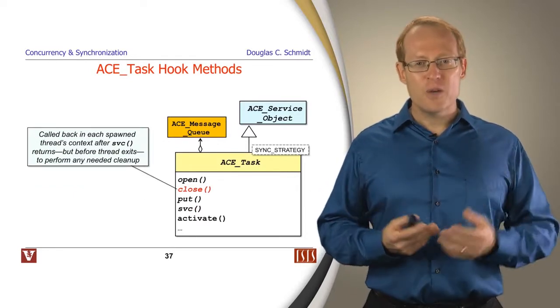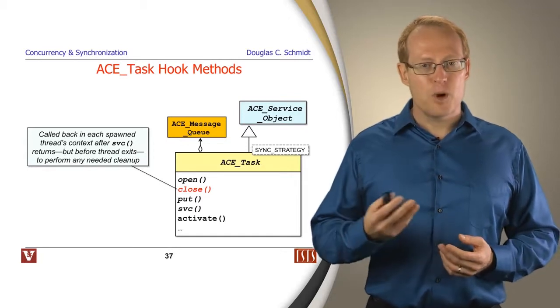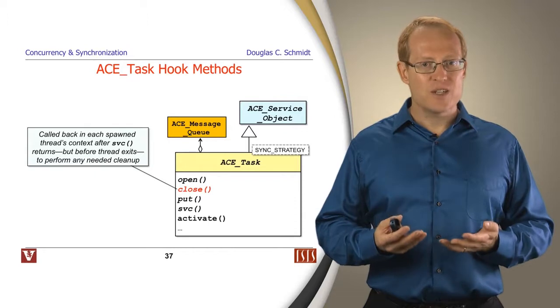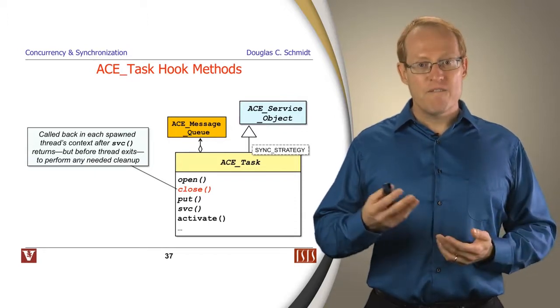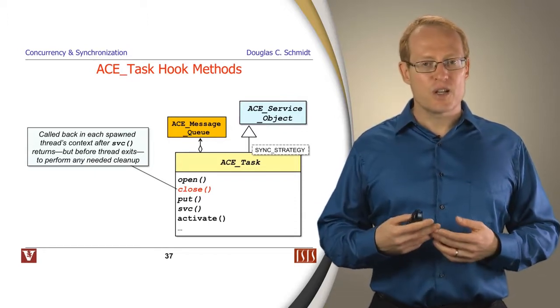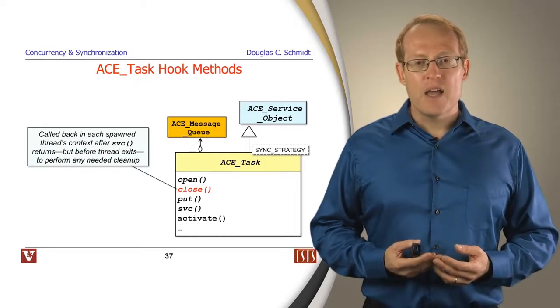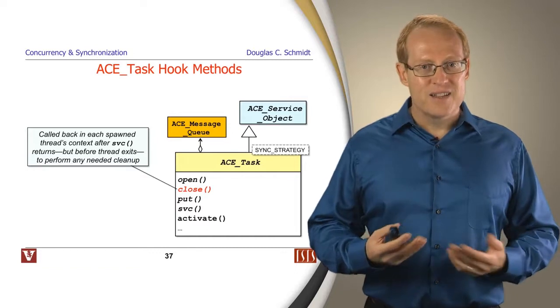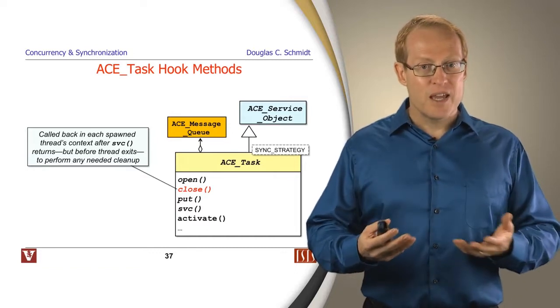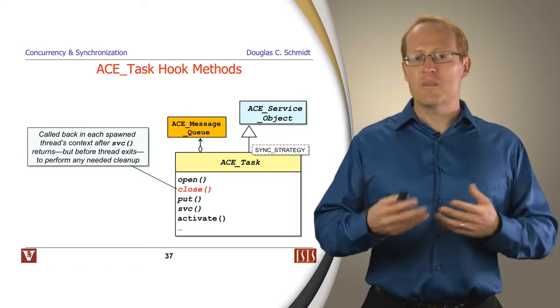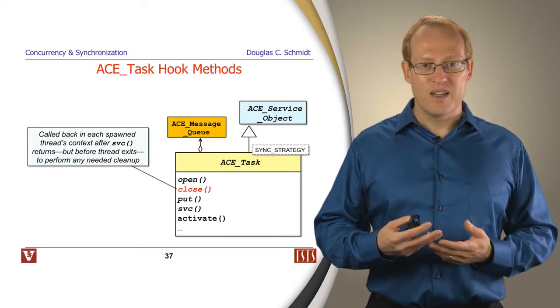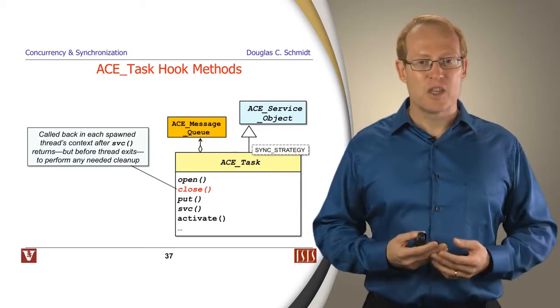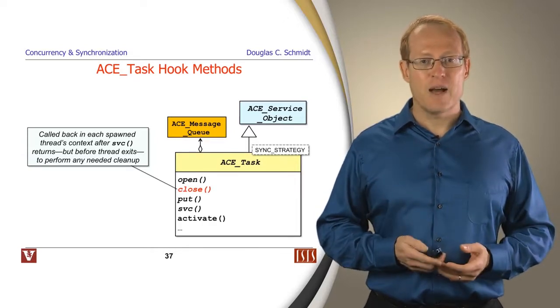The final hook method we'll talk about here is the close method. Its purpose is simply to be called back when the thread executing the service hook finishes, and it gives a chance to clean up anything that might need to be cleaned up. You will have as many calls to close as there are threads that are running the service methods as part of the active object. And there's some mechanisms you can use to figure out whether you're the last close method to be called when the last thread exits from the active object.